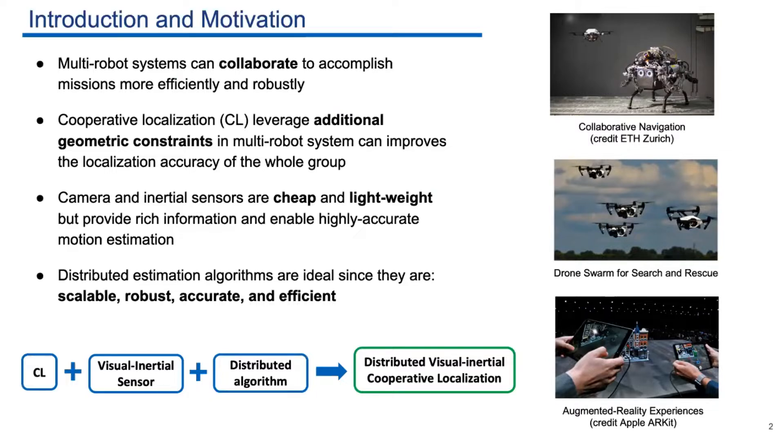When we design algorithms for multi-robot systems, we prefer the distributed ones as they are scalable, efficient, and robust. So in this paper, we use virtual inertial sensors to achieve a distributed CL algorithm.